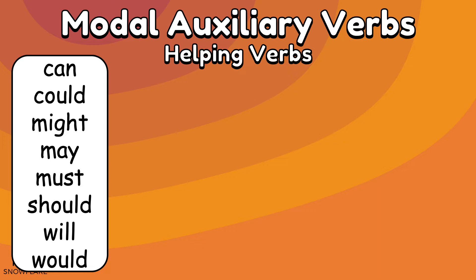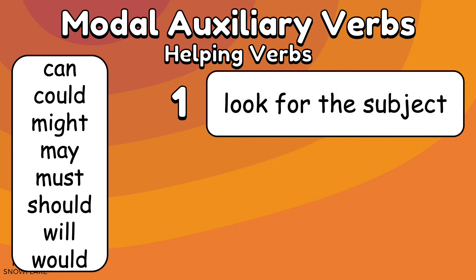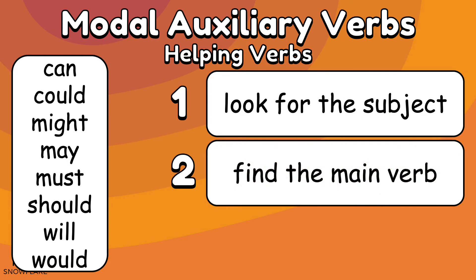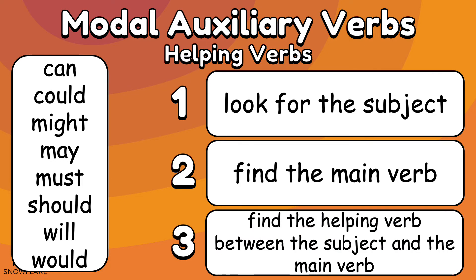To find the helping verbs in a sentence, we first look for the subject — who or what is the sentence about. Next, we find the main verb. This is the action. We can then find the helping verb in the words between the subject and the main verb.